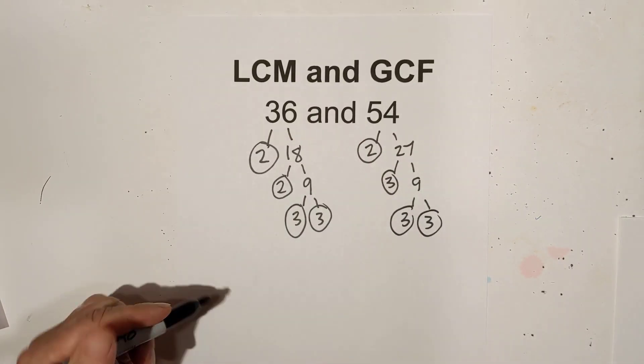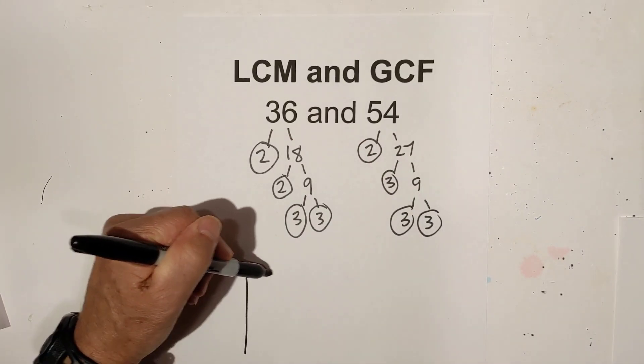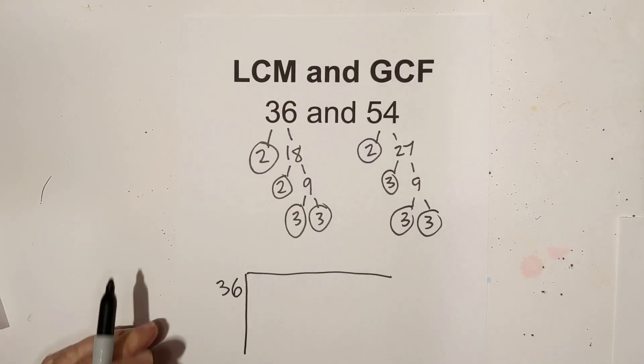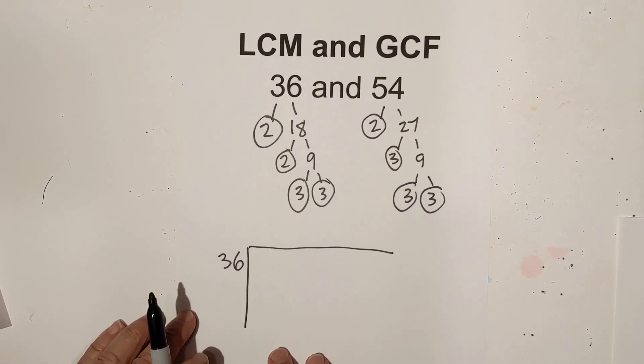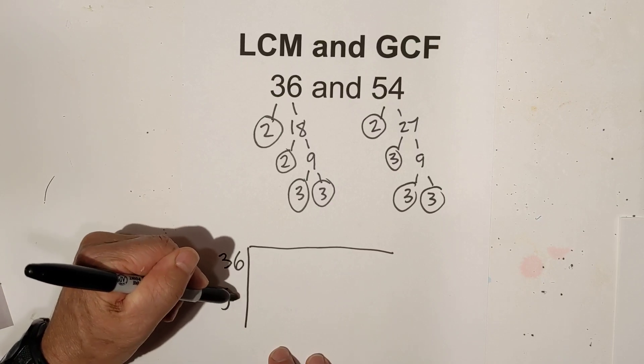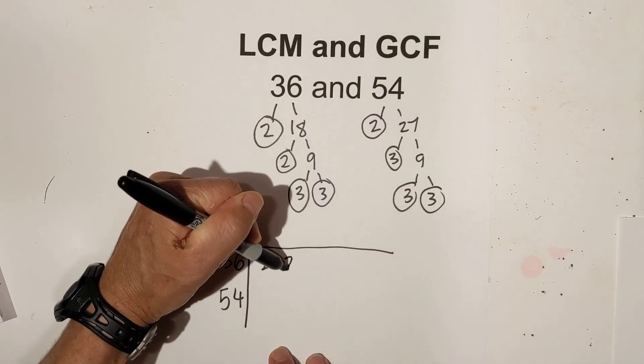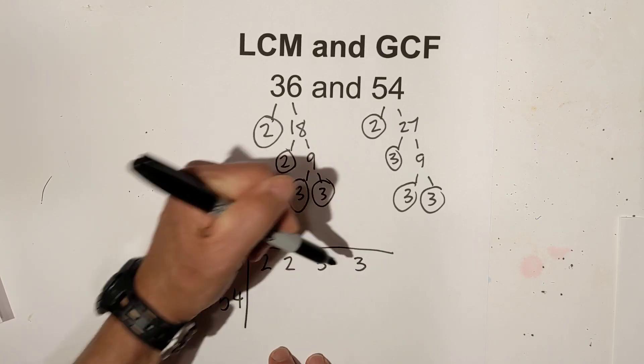Now this chart is really easy and helps avoid mistakes. I'll write the primes for 36: we have 2, 2, 3, and 3.